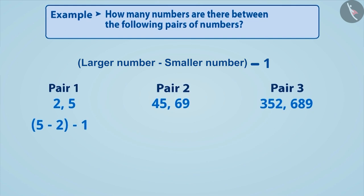By doing so, we can say that there are two whole numbers between 2 and 5.